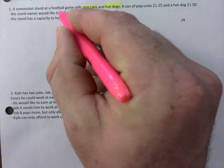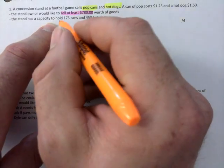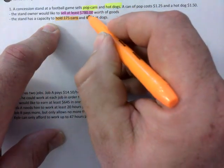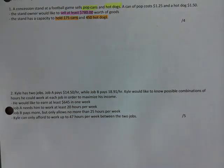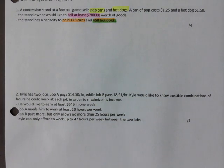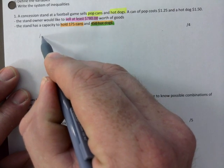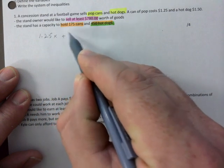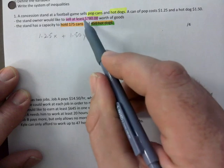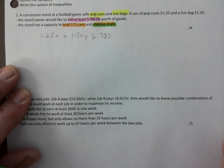You'd like to sell at least $780 worth of goods — that's definitely going to have an inequality associated with it. The stand has capacity to hold this many cans and this many hot dogs. For selling: $1.25 for every pop can and $1.50 for every hot dog, and you'd like to sell at least $780 or more. That takes care of the first inequality.